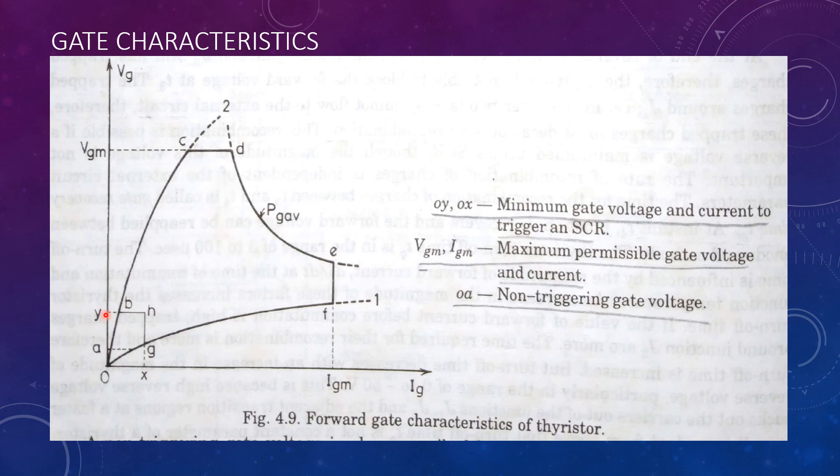The minimum value of gate voltage OY and minimum value of gate current OX required to turn on a thyristor are also specified.